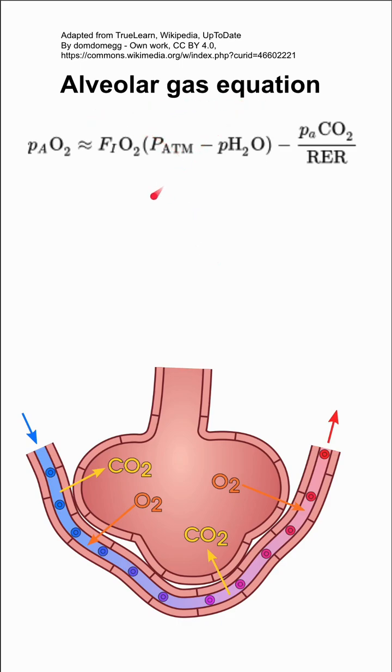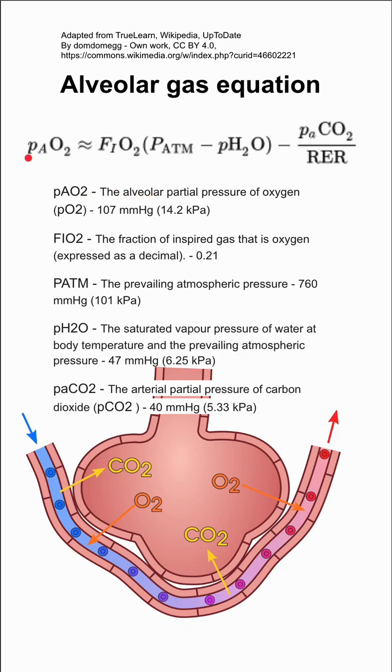This is the alveolar gas equation. The terms are defined here. PaO2 is the alveolar partial pressure of oxygen, and then we have sample values at like sea level and standard temperature and conditions listed as well.